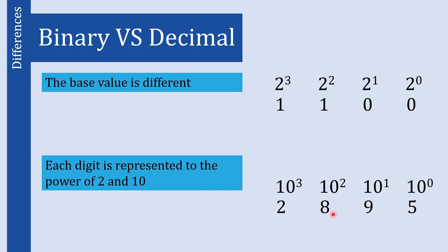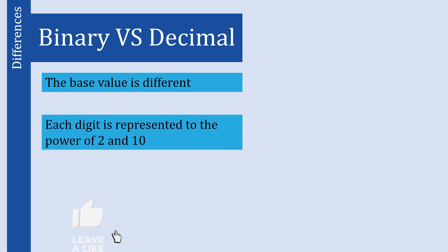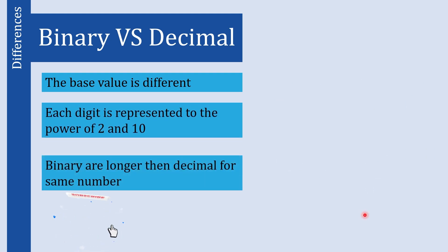In the decimal number system, for example with the digit 8, each digit's magnitude can be represented as a power of 10. If 8 is the third digit, then 10 to the power of 2 is 100, multiplied by 8 gives us 800. If it were in the second position, its magnitude would be 80. That is why in binary and decimal, each digit's magnitude is represented as a power of 2 or 10 respectively.